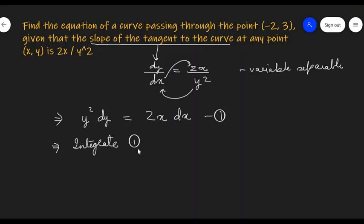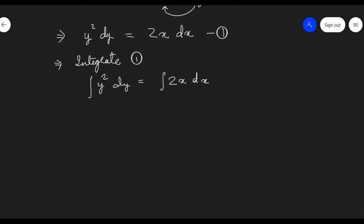On integrating, we are going to get integration of y squared dy equals integration of 2x dx. Now to integrate this, we are going to make use of the identity that integration of x raised to n dx can be calculated as x raised to (n+1) upon (n+1).